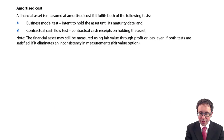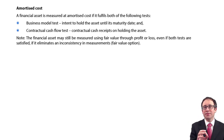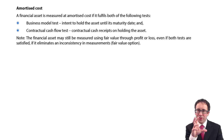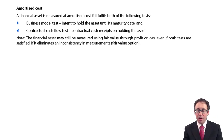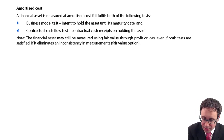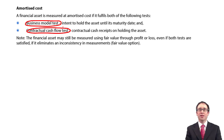Then we've got the other category: amortised cost. Normally it applies to your investments in debt. Your financial asset is measured at amortised cost, and to qualify for this you have to pass two tests: the business model test and the contractual cash flow test.